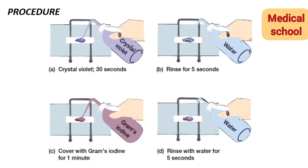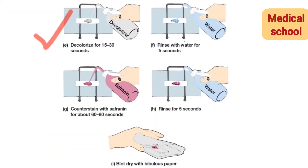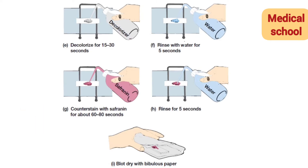Before going into mechanism, let's see the procedure in short. Pehle bacteria ka smear banao, slide ko heat fix karo. Then crystal violet daliyye, paani se wash kariyye. Iodine daliyye, aur paani se wash kariyye. Alcohol se decolorize kariyye, paani se wash kariyye. Counter stain with safranin, wash with water, and blot dry.